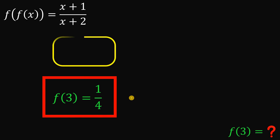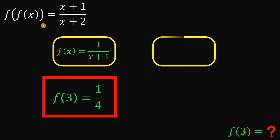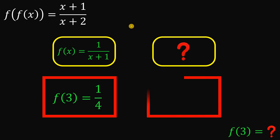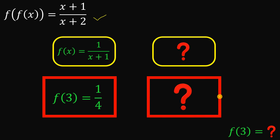That answer corresponds to a function equivalent to f of x equals one over x plus one, and this is only partially correct. Why partially correct? Because there's another function that satisfies f of f of x equals x plus one over x plus two, which means there's another value for f of three. In this video I will show you the correct approach.